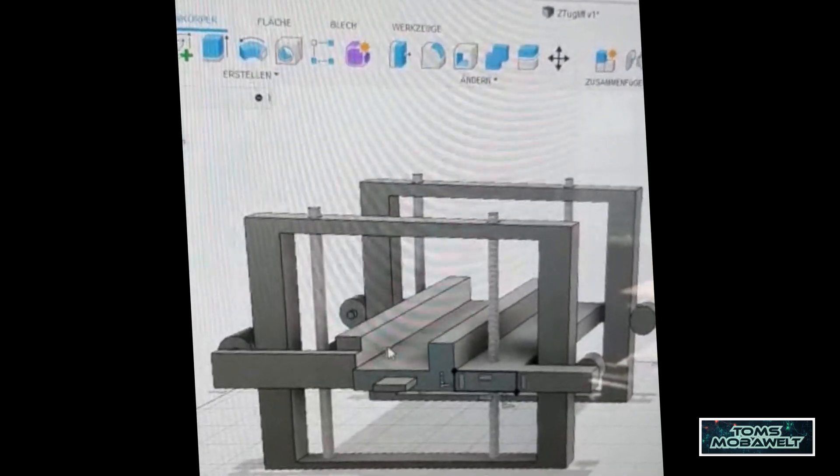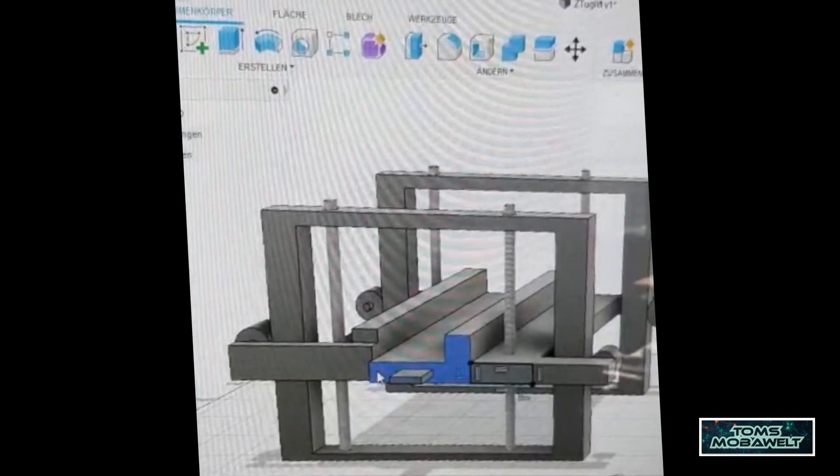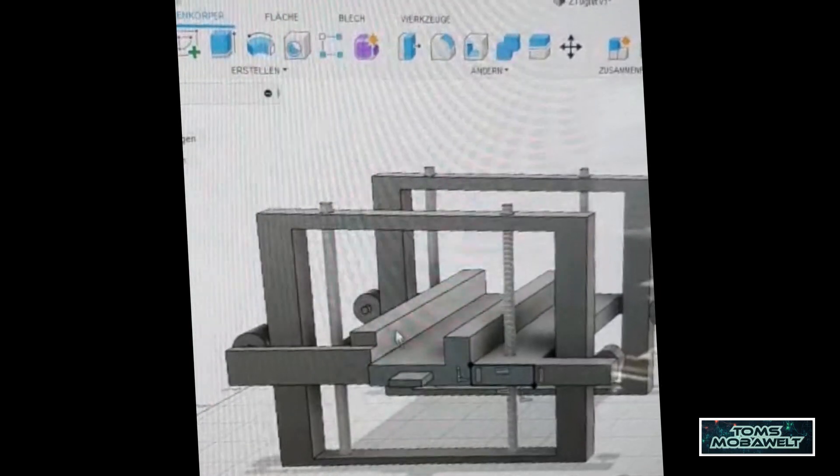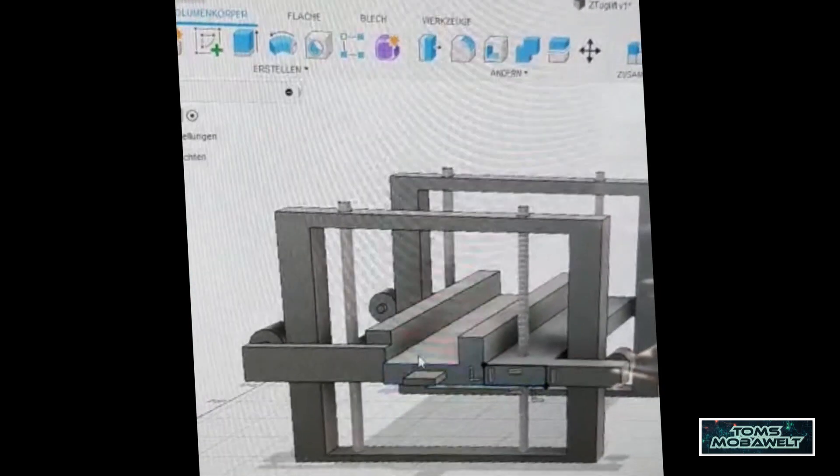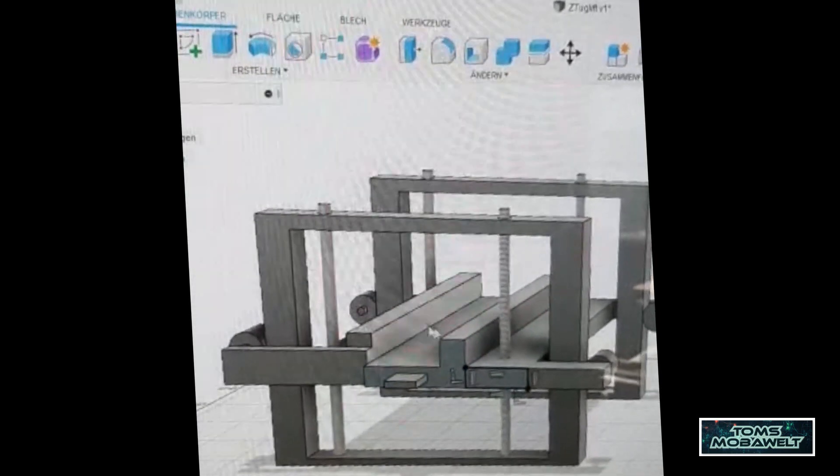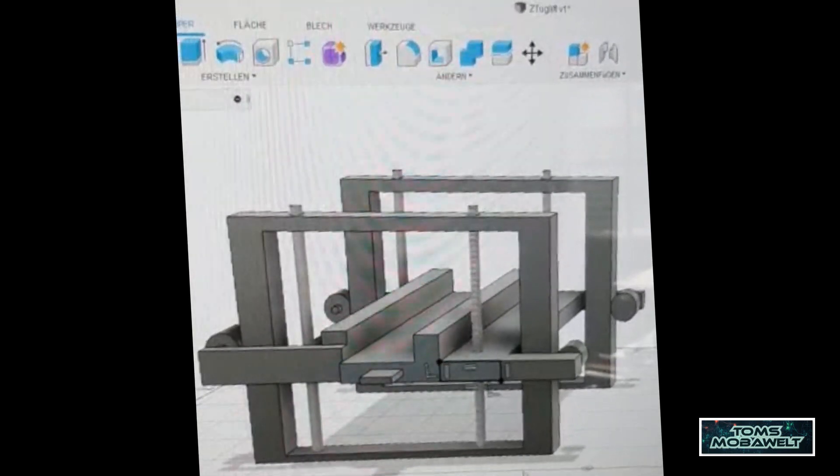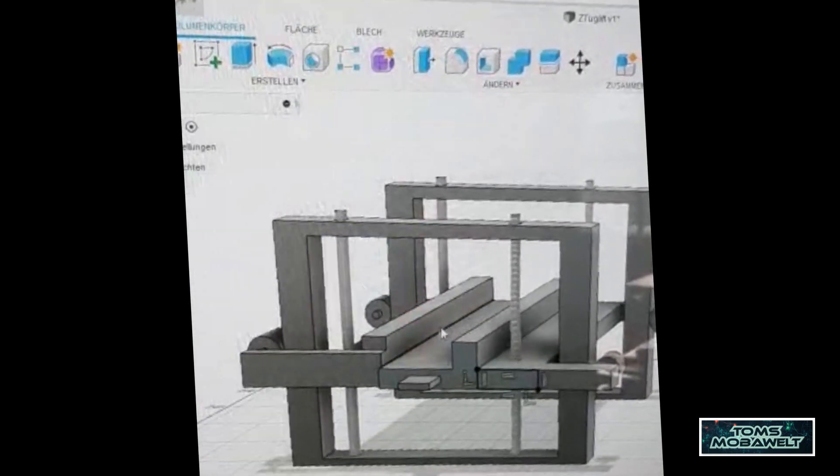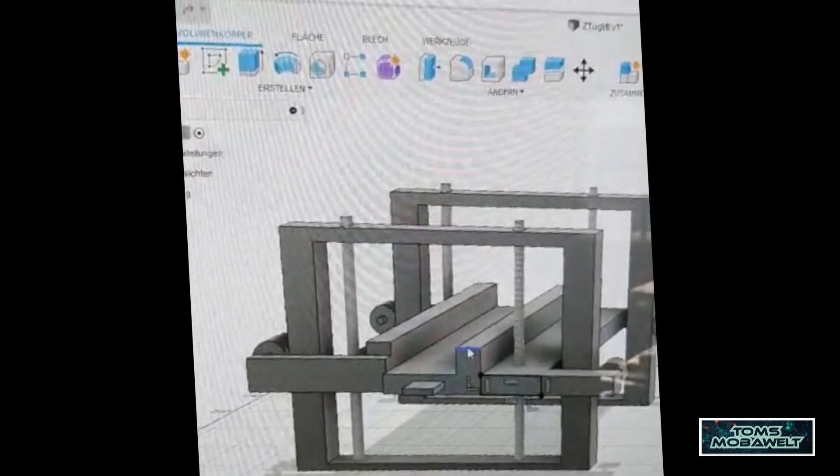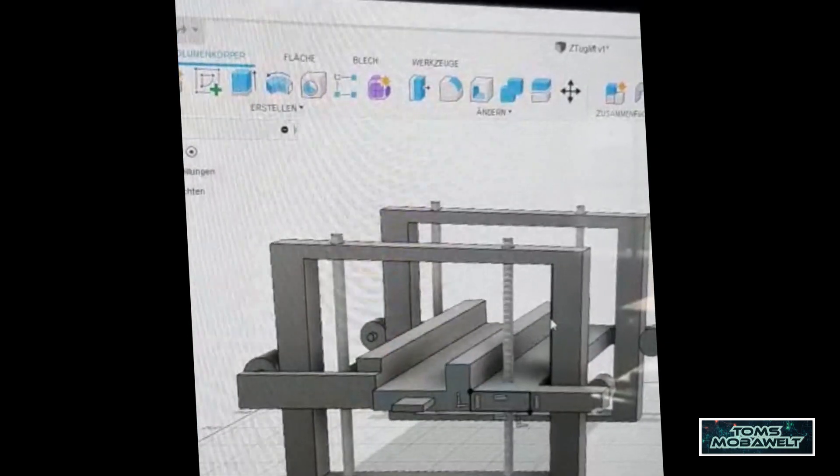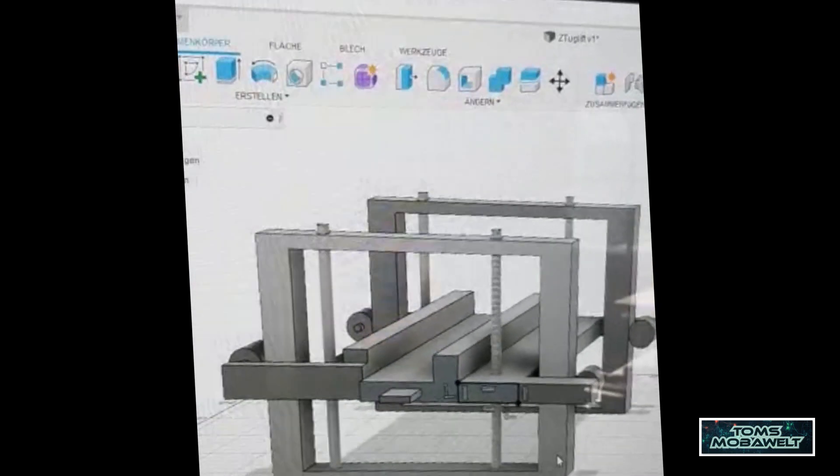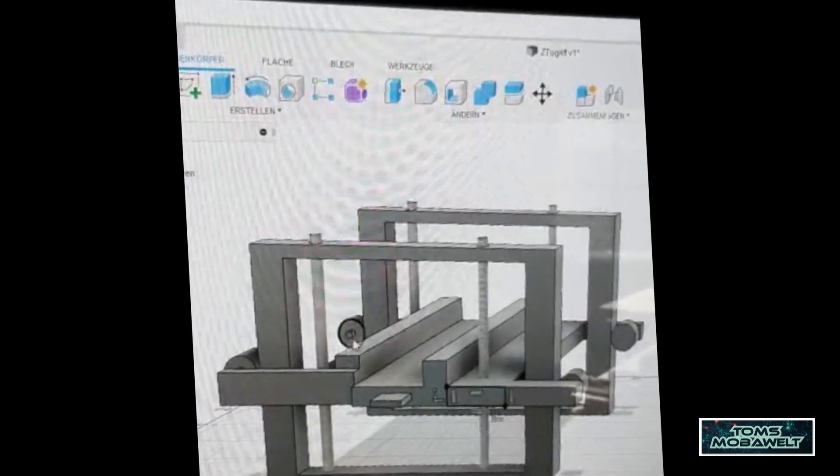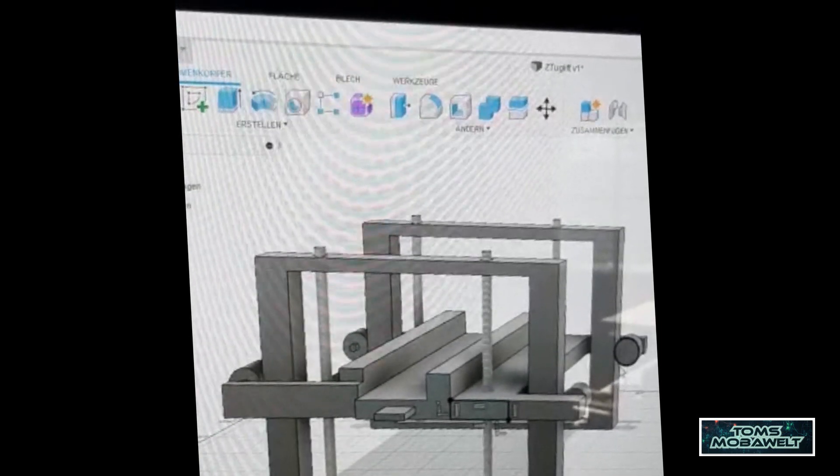Ich habe hier eine Seitenwand eingebaut, falls es zu einer Entgleisung kommen würde im Zuglift drin. Wenn hier eine Entgleisung stattfindet, der Zug fällt da nicht runter, der ist geschützt. Dann habe ich hier Führungsrollen, weil in H0 arbeiten wir mit mehr Gewichten. Dann würde das bedeuten, dass ich die Gewindestangen mehr abnutze.